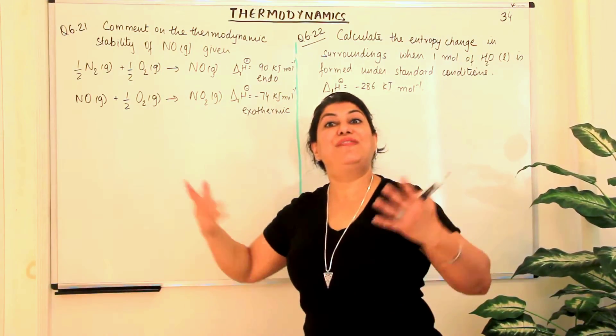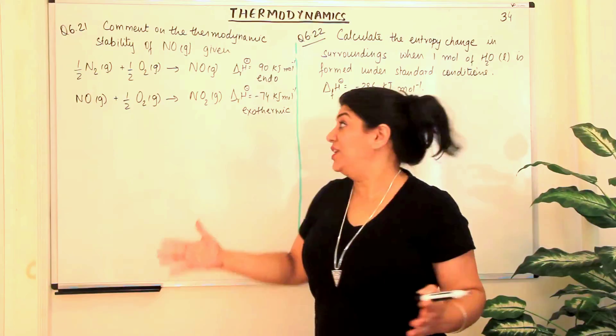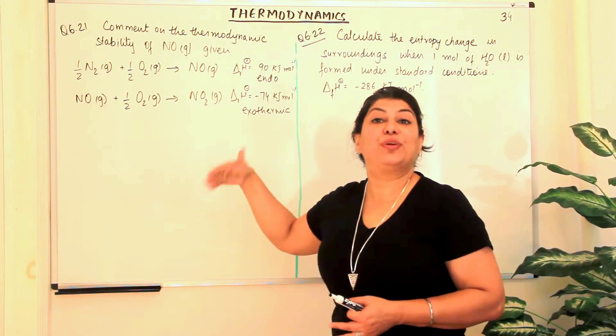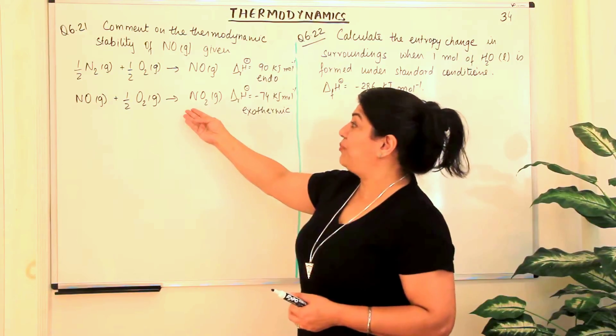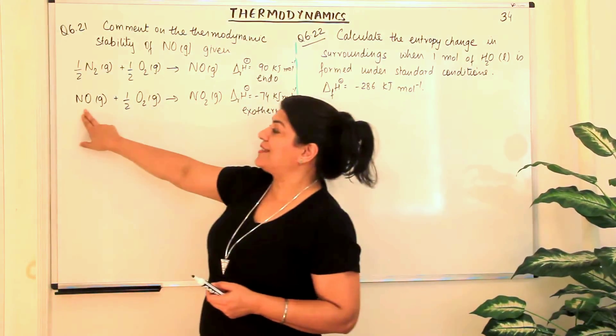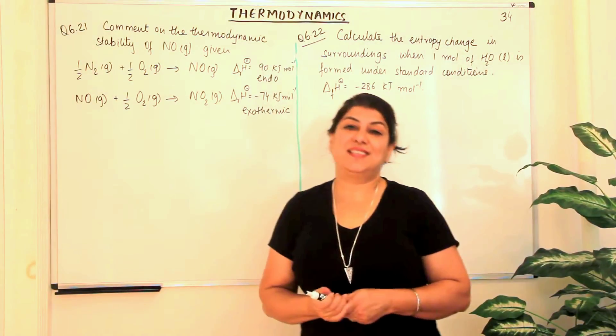In the next reaction, NO reacts with oxygen to give you NO2, and this reaction is exothermic, which means it is thermodynamically feasible. It is a good reaction and is leading to stability of the product. And what is the product? The product is NO2. Which means, again, the second reaction also tells us that NO is unstable.